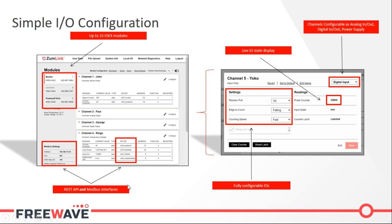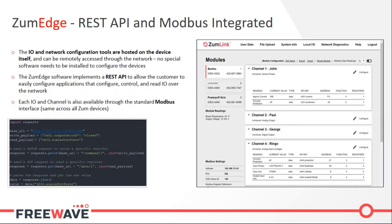The ZoomEdge also introduces a new powerful feature for configuring and controlling IOs in the form of a REST API. To standardize and simplify the way that programs configure, read, and write the ZoomEdge IOs, the REST API is used as a standard interface that uses HTTP requests to connect to the IO EX modules. This is a common tool used in networking, meaning any third party can write automation or intelligence programs without specialized knowledge of industrial protocols — just standard knowledge of a ubiquitous networking application interface.